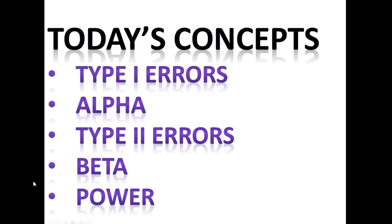I want to go over the types of errors we can have when we do hypothesis testing. So we're dealing with Type I errors and Type II errors.